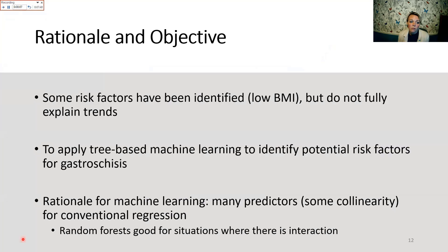These time trends and age differences are quite curious. While some risk factors like low BMI have been identified, the multitude of studies on gastroschisis still don't fully explain these trends. Our aim was to use tree-based machine learning to identify new risk factors. Our rationale for ML included having so many potential predictors that conventional regression would cause model convergence issues, highly collinear variables especially with maternal age, and the fact that random forests handle interactions well — which we theorized may be at play given the age-related differences in trends.